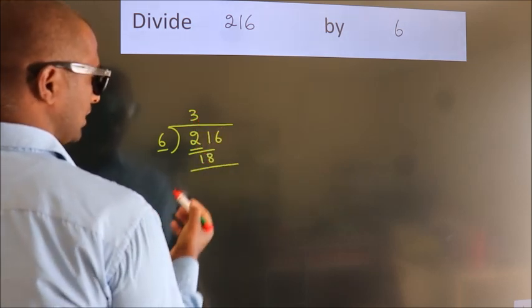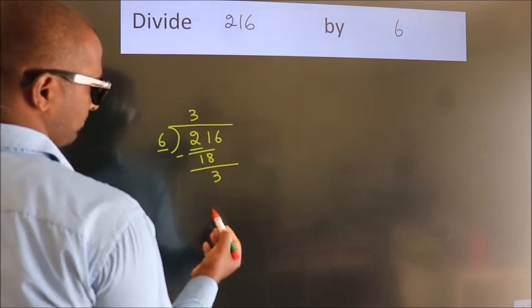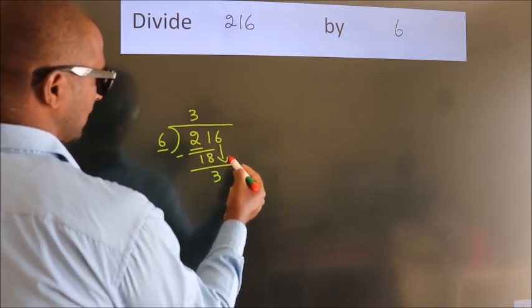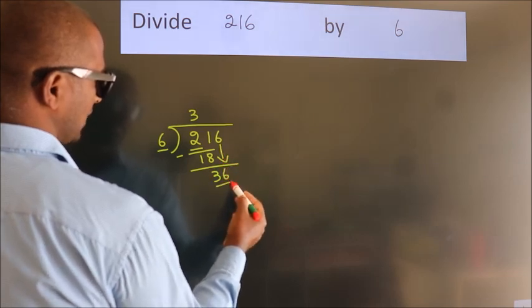Now, we should subtract. We get 3. After this, bring down the beside number. So, 6 down. So, 36.